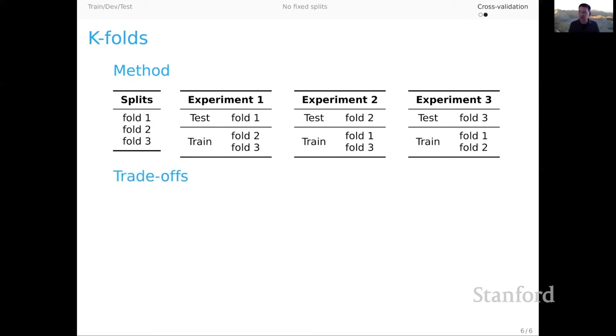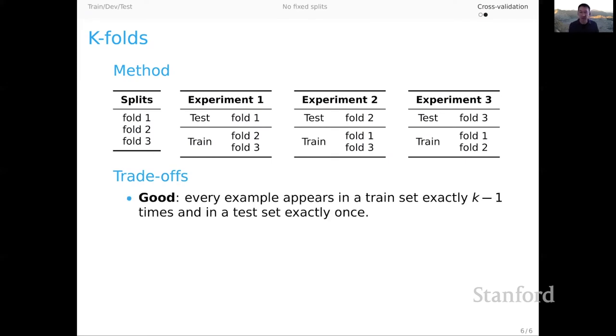The trade-offs here are slightly different from the trade-offs for random splits. So the good of this is that every example appears in a train set exactly k minus one times and in a test set exactly once. We have that guaranteed in virtue of the fact that we use a single split over here to conduct our three experimental paradigms.